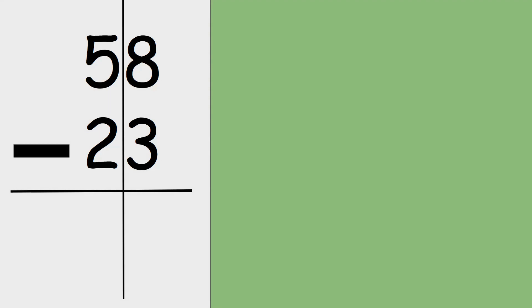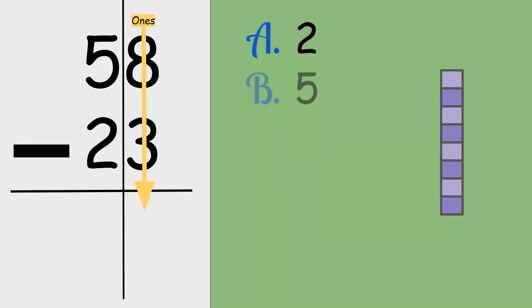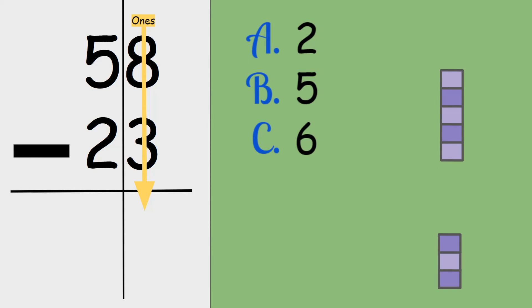There we go. Now let's get started: 58 minus 23, starting in the ones. Eight take away three — is the answer two, five, or six? Eight take away three is five.